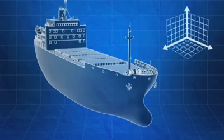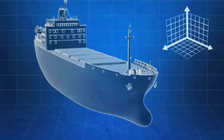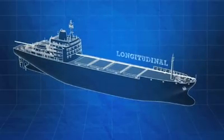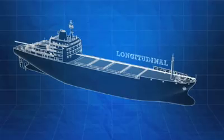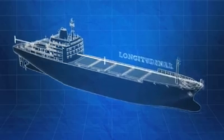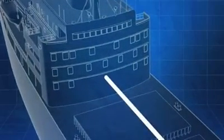Distances onboard ships are measured in one of three directions: longitudinally, transversely, and vertically. Longitudinal is the horizontal direction along the length of a ship. Longitudinal distances are measured from one of three places: the forward perpendicular, the aft perpendicular, or midships. Where longitudinal measurements are taken from will vary from ship to ship.